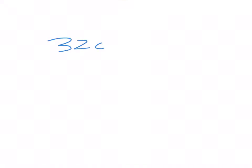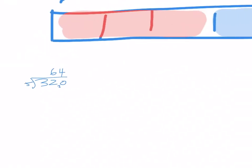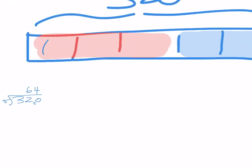320 divided by five. I see that five times six is 30, which will be two leftover, and five times four is 20. So this tells me that each block will have 64 pumpkins.